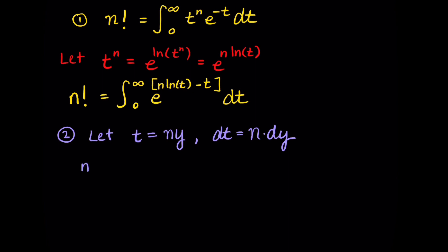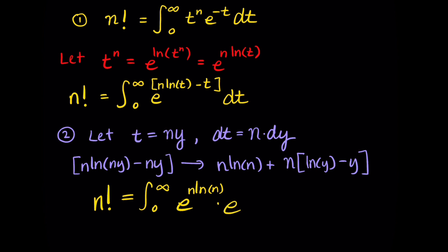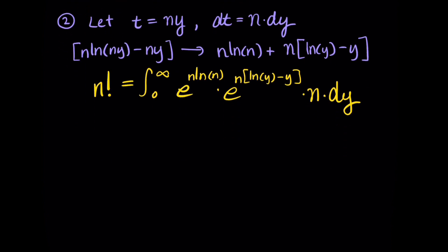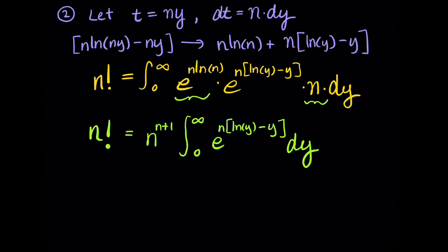We do a second substitution by letting t equal n times y, so dt equals n dy. Substituting into the exponential and applying the rules of natural logarithms, we pull a constant out of the integral. Rewriting the integrand and separating the constant parts — noting that n is also a constant — we factor those constants out. Our integrand becomes e raised to n times the quantity natural log of y minus y, times dy.